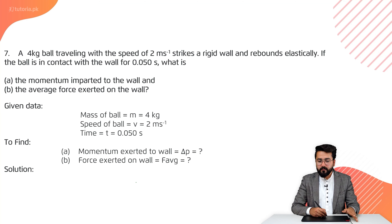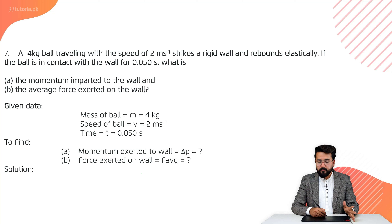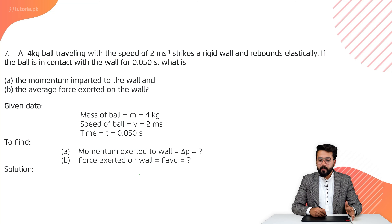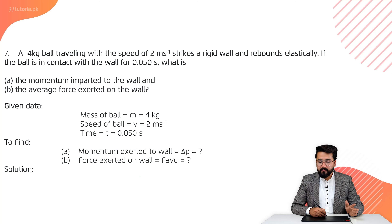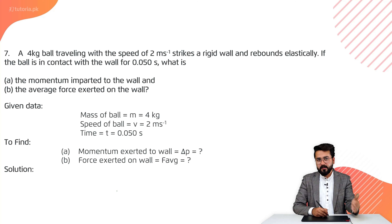Given data: mass of the ball, speed of the ball, time t. We need to find the momentum imparted to the wall (delta p) and the average force executed on the wall (F average). Now we have a solution.